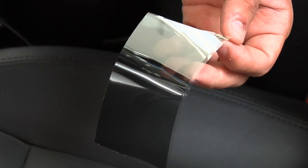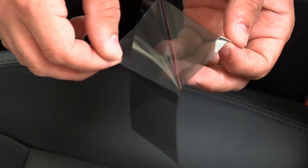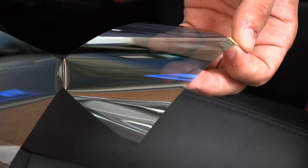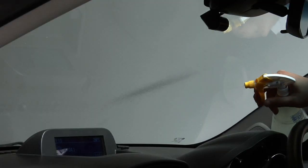Using the tint film is optional, but it does give a clearer display. Should you choose to use it, simply remove the protective film from the back of the tint provided and spray both the film and the windscreen with soapy water.